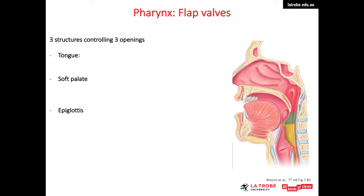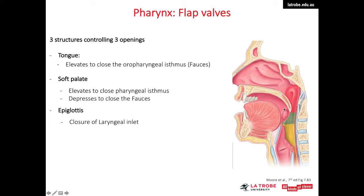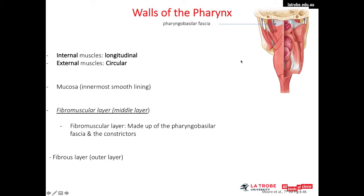With these anatomical structures, there are three flap valves of the pharynx that control the three openings. The tongue elevates and closes the oral pharyngeal isthmus or fauces. The soft palate or velum elevates or depresses, closing either the pharyngeal isthmus or the fauces. The epiglottis closes the laryngeal inlet during swallowing. The walls of the pharynx are exceptional in the alimentary tract in that the internal muscles are longitudinal and the external muscles are circular, the opposite arrangement to the rest of the alimentary tract.